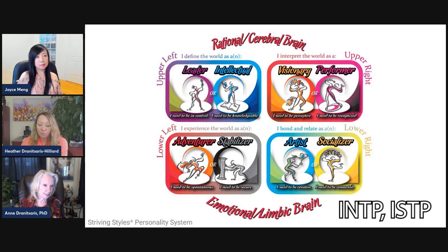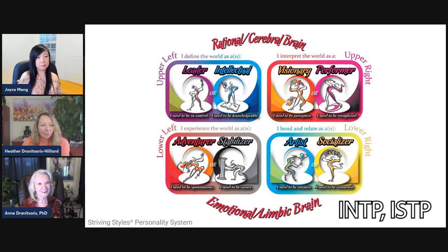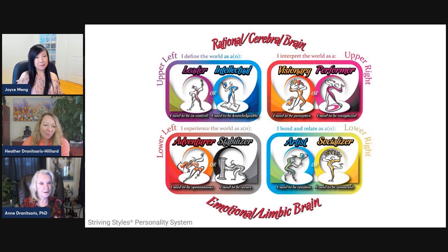The introverted thinking function — the Intellectual — controls through controlling knowledge. They're not looking to control the outer world; they have an internal system for self-governance and decide what information is useful. They're focused on becoming the expert because information is power. We call this the power quadrant of the brain. The Intellectual makes decisions about who's worth talking to based on whether they deem them smart enough.